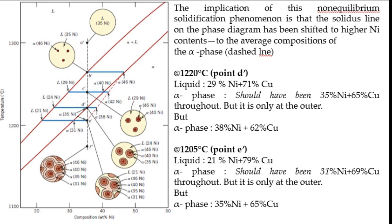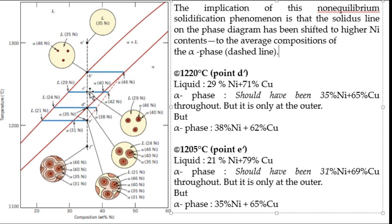The implication of non-equilibrium solidification is that the solidus line shifts to higher nickel content—graphically it shifts to the right. From point C' to point D', at D' the alpha phase should have been 35% nickel and 65% copper throughout, but this composition is only present at the outer periphery because nickel could not diffuse properly.